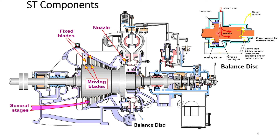This is the balance disk. The steam inlet is coming here and there are labyrinth seals through which the steam passes. This steam acting on the collar pushes the rotor towards the suction side, and that is how it balances the thrust created by the rotor blades.